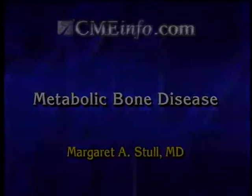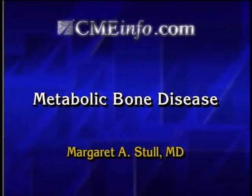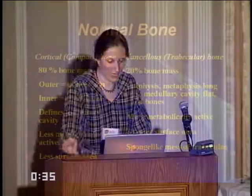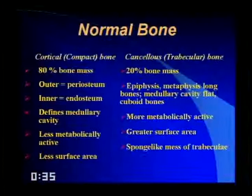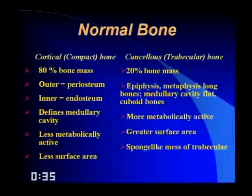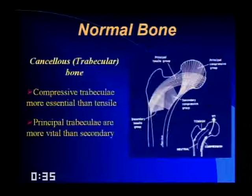Most people don't consider metabolic bone disease their favorite subject, but you'll be surprised how much you see on a daily basis because osteoporosis is the most common metabolic bone disease. Cortical bone makes up most of the bone mass, while cancellous bone — found in the physis, metaphysis, medullary canal, and flat bones — is more metabolically active with greater surface area. The compressive trabeculae are more important than the tensile, and the principal trabeculae more important than the secondary. With bone loss, secondary trabeculae are lost first.